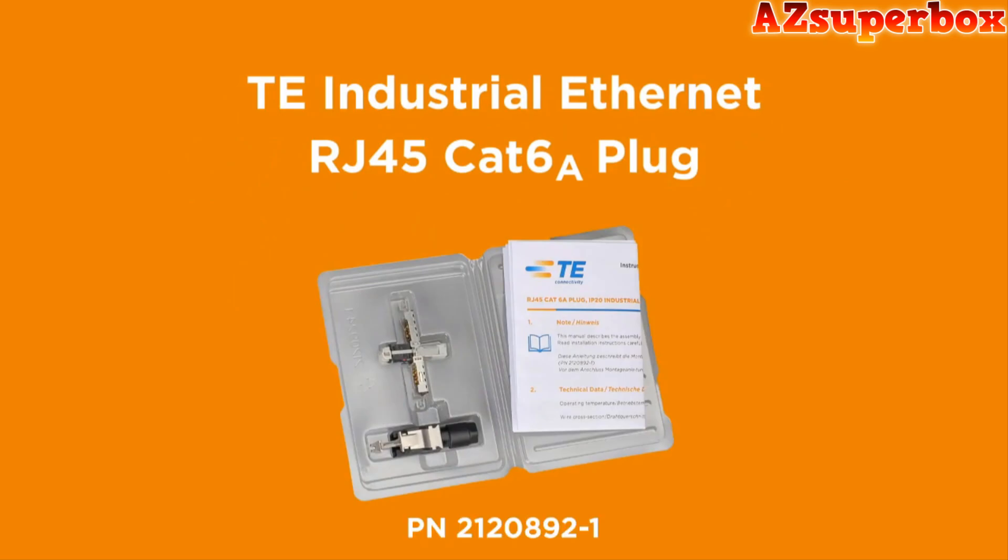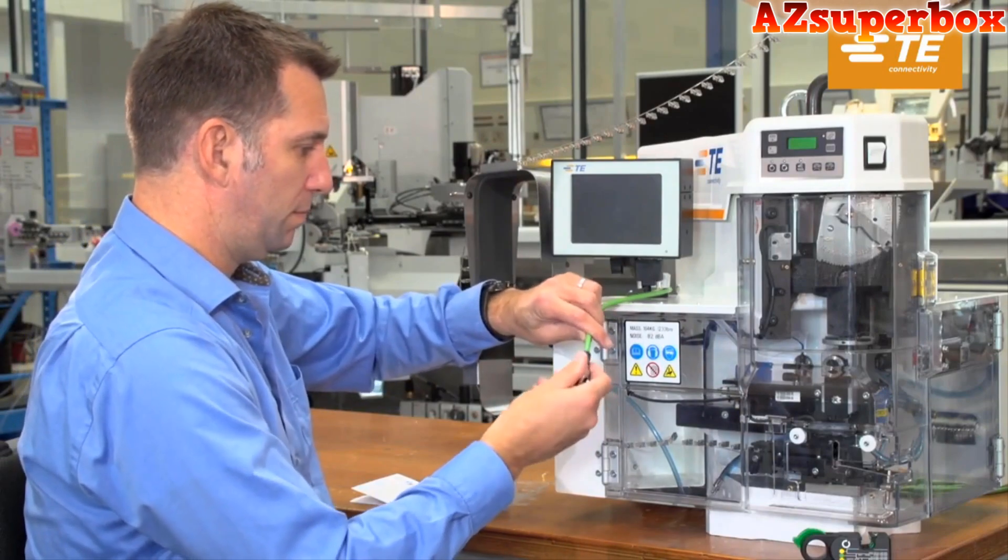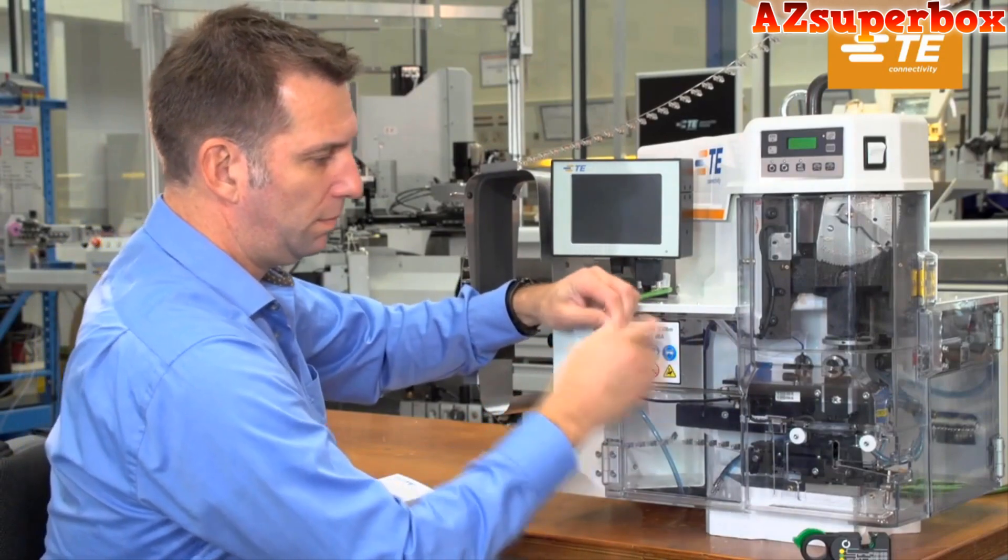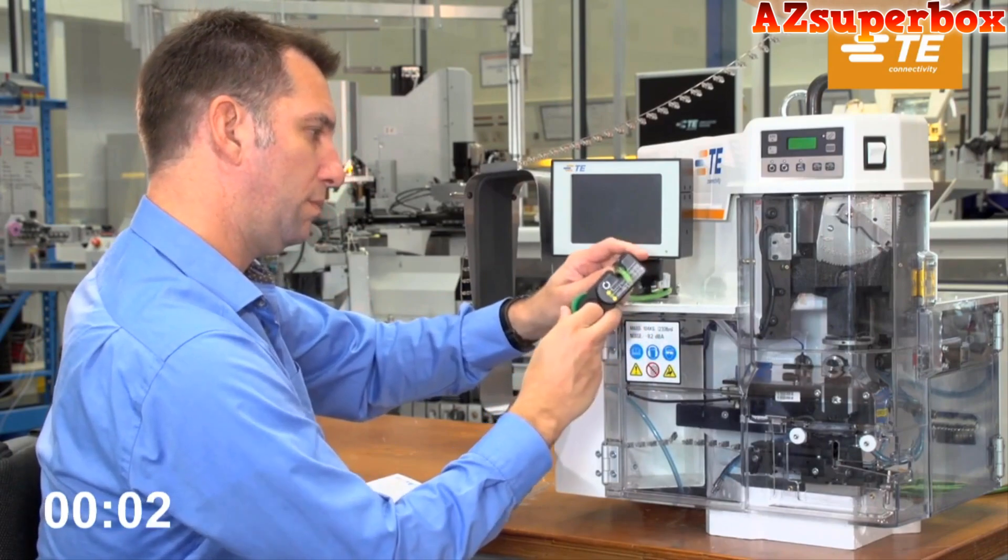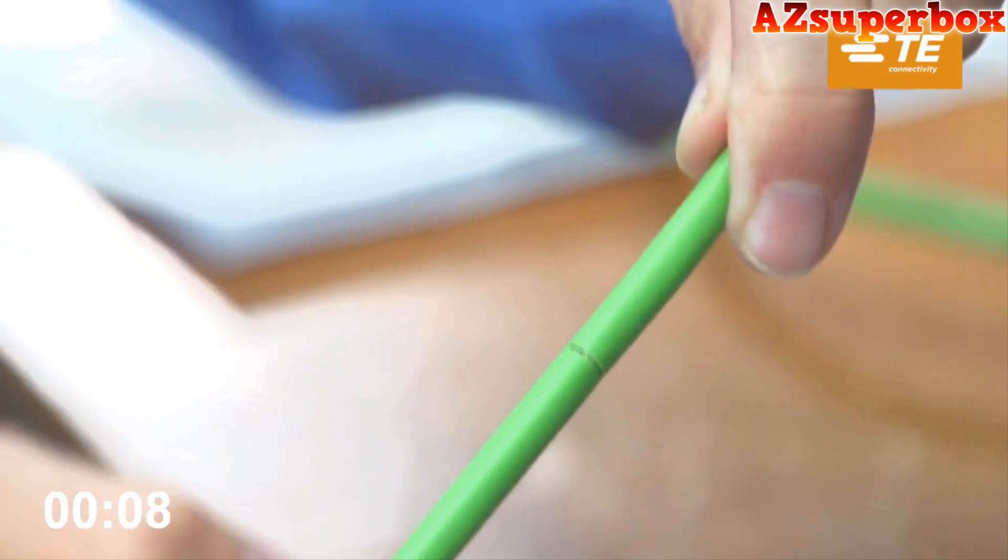T.E. Industrial expands its field installable RJ45 Common Core family with the CAT 6A 10Gbps variant. The innovative one-piece Common Core with the integrated wire cutoff and contacting technology and the IP20 housing allows an efficient installation without special tools.